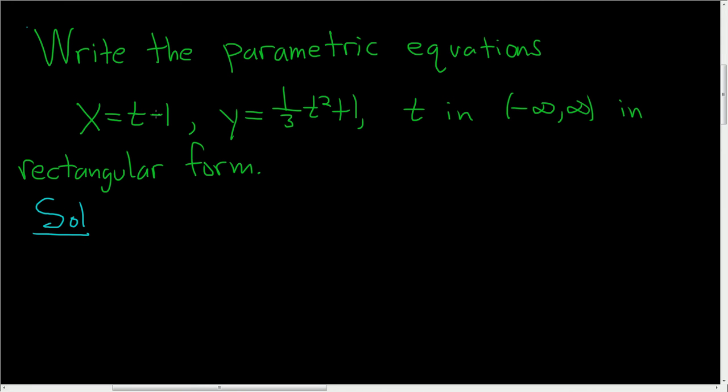So usually that means that we want to take one of the equations and solve for t. In this case, the easiest equation to use is the first one.